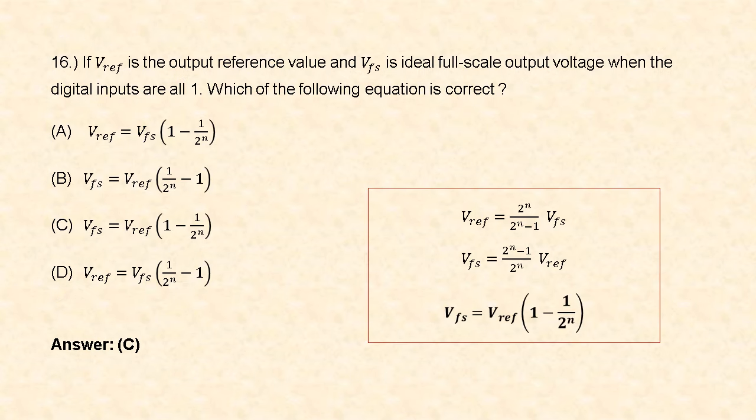Next question: if V_r is the output reference value and V_fs is the ideal full scale output voltage when the digital inputs are all 1, which equation is correct? The formula is V_r = (2^n / (2^n − 1)) · V_fs, so V_fs = ((2^n − 1) / 2^n) · V_r = (1 − 1/2^n) · V_r. So option C is correct.